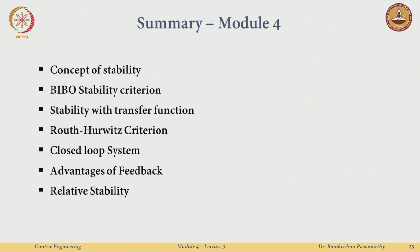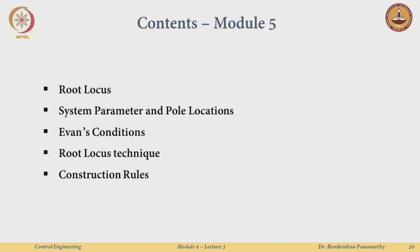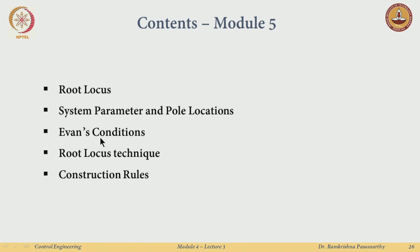To summarize: we have covered the concept of stability including BIBO stability, pole-based stability criteria, the Routh-Hurwitz algebraic method, advantages of closed-loop feedback, and basic relative stability analysis via axis shifting. What we will do next is focus on more sophisticated tools for relative stability — the root locus method — which shows how pole locations change as system parameters vary.